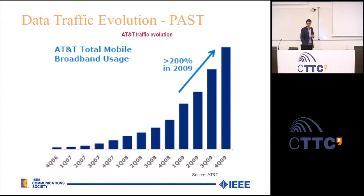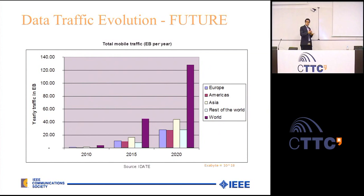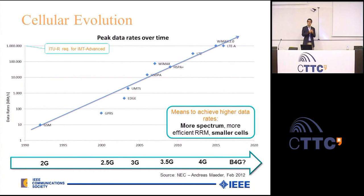In the past, data traffic has been suffering exponential growth over the last years, and this trend is expected to continue in the future. The amount of data we want to transmit through cellular networks is going to increase exponentially. The evolution of cellular network generations has evolved so that they can satisfy the needs of users wanting to transmit more and more bits per second with quality of service requirements.